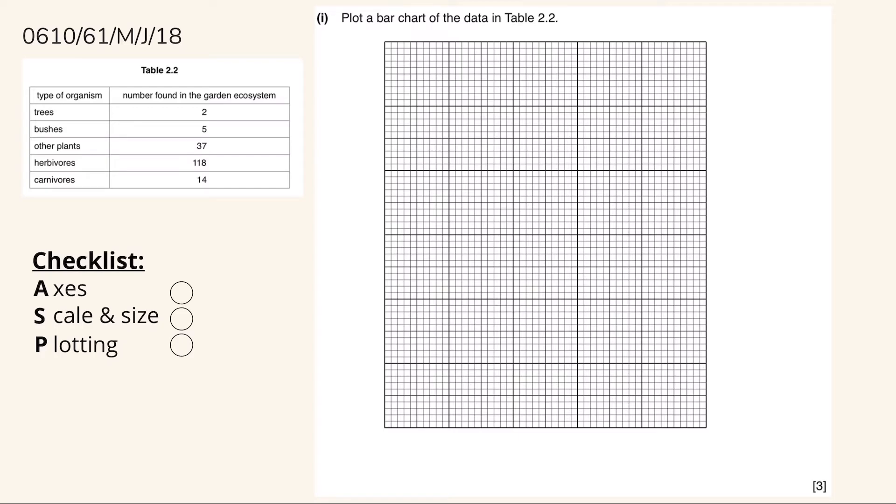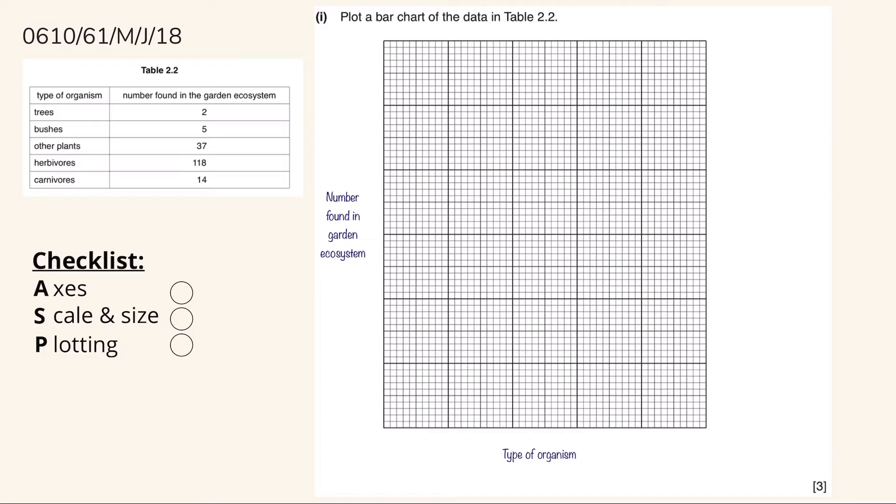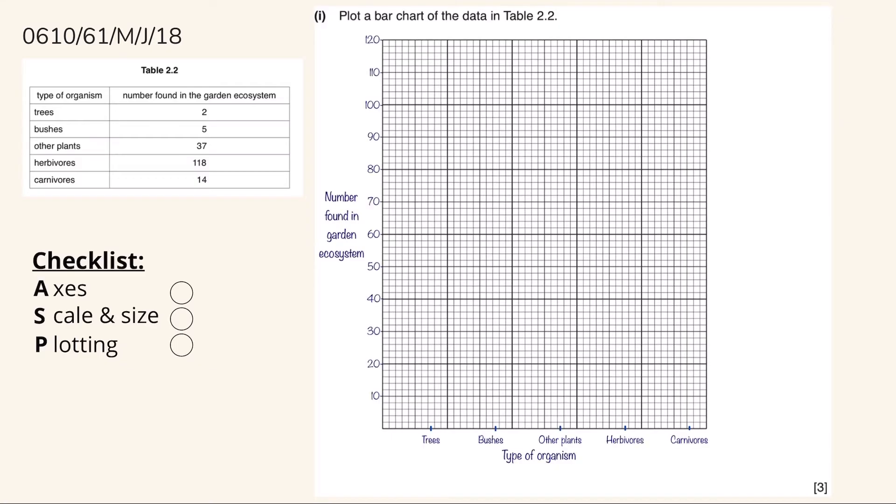Just like the previous question, let's add the number found in Garden Ecosystem on the y-axis and type of organism on the x-axis. After that, we add the values on the graph. So the values on the y-axis should be the multiples of 10. So each 5 squares will equal to the multiple of 10. But on the x-axis, we should divide the labels equally so that there will be 5 squares in between each bar.